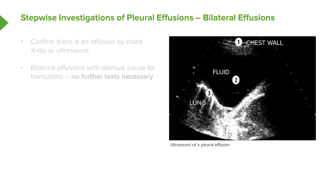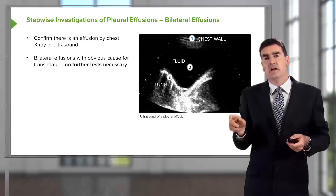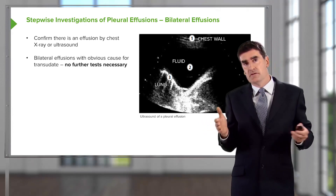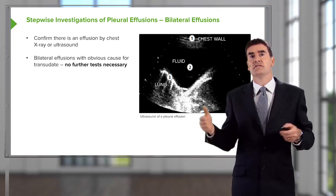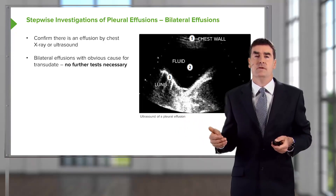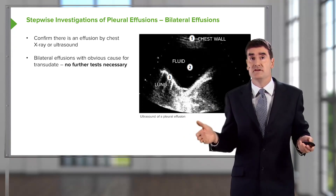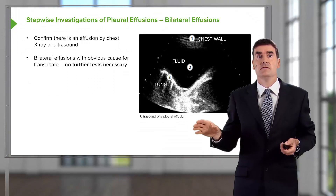So how do you investigate somebody with a pleural effusion? First, you need to confirm there's a pleural effusion by doing a chest x-ray, and a pleural ultrasound would also be very helpful. This ultrasound picture shows clearly a very black area, which is the fluid, with the lung separated from the chest wall by that black area. If somebody has bilateral pleural effusions, they're likely to be transudates. So, somebody with bilateral effusions and an obvious cause for transudates, such as known heart failure or low albumin due to nephrotic syndrome, actually doesn't need any further tests — the answer as to why the patient has pleural effusions is there.